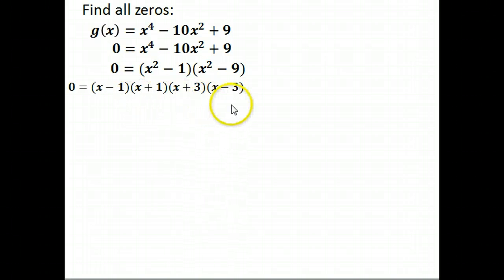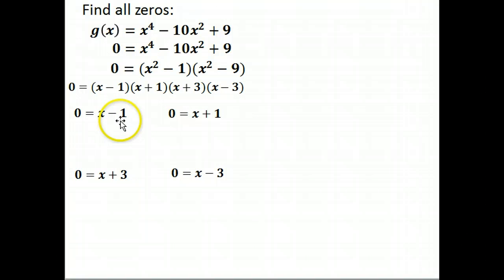Now I have four different ones here that I have to set equal to 0. So I do that now. x minus 1 equals 0, x plus 1 equals 0, x plus 3, x minus 3. I've got four of them. I'm going to go ahead and solve all four of these here. I just add it to both sides. So now I have a total of four answers here.